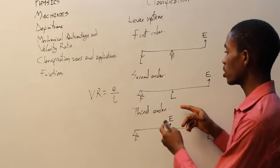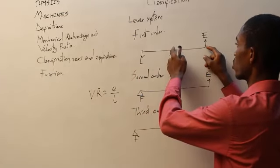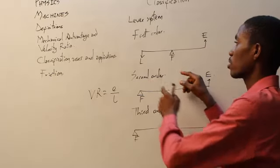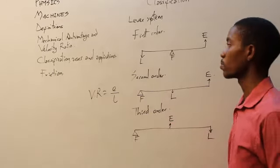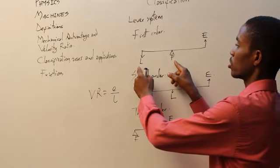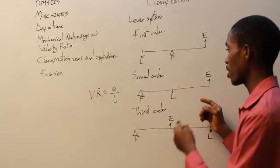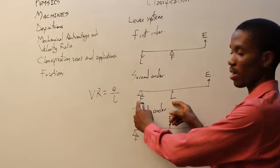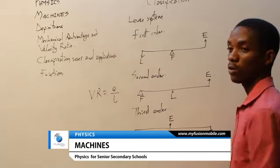Distance traveled by effort is fulcrum to effort. Distance traveled by the load is fulcrum to load. In the same manner, for each order of lever, you apply: distance traveled by effort divided by distance traveled by the load.